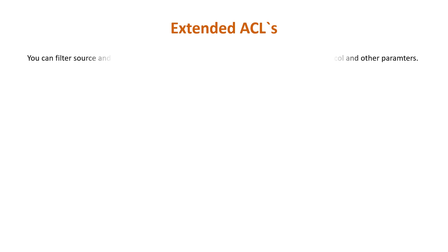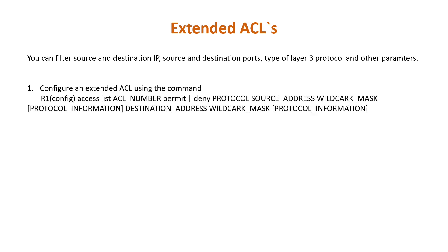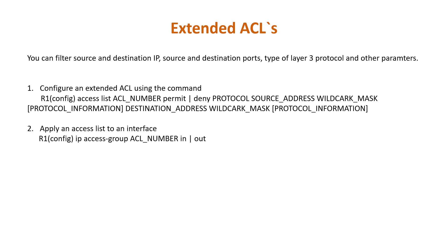Extended access control lists allow you to evaluate the source and destination IP address, the Layer 3 protocol type, source and destination port, and other parameters. Extended access lists are harder to configure and require more processor time than standard access lists, but they enable a much more granular level of control. Two steps are required: first, configure an extended ACL using 'access-list [acl-number] permit|deny [protocol] [source-address] [wildcard-mask] [destination-address] [wildcard-mask]'; second, apply it to an interface with 'ip access-group [acl-number] in|out'. Extended ACL numbers range from 100–199 and 2000–2699.